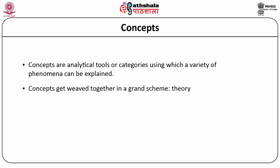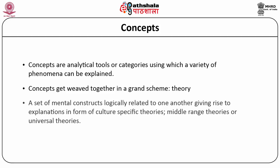When we talk about a theory, we are talking about a set of mental constructs. These mental constructs are logically related to one another in such a way that this logical relationship gives rise to a set of propositions, a set of explanations. These explanations or propositions are usually universally valid, or in a limited scale — if we call it a middle range theory — they are valid in a limited manner or are culture-specific.